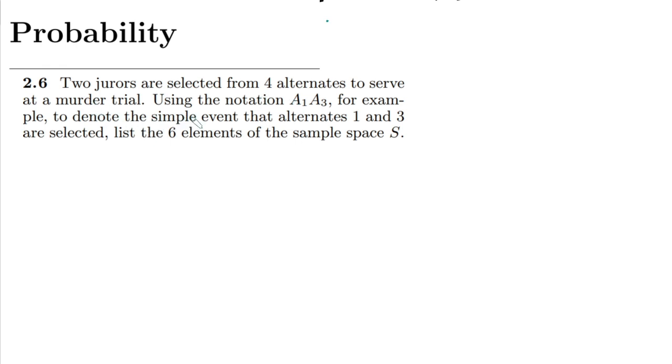So out of the four jurors we have to select two jurors in a murder trial. Using the notation a1 a3, for example, to denote the simple event that alternates one and three are selected, we list the six elements of the sample space. It is already stated that there will be six elements — so how would it be six?